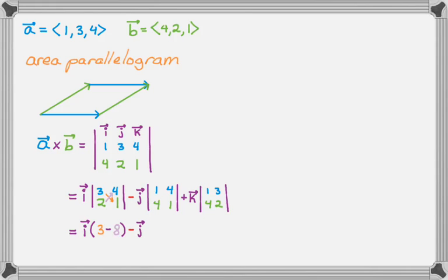And then minus J. And parentheses, it's going to be 1 times 1, and then minus 4 times 4. And then plus K. And parentheses, it's going to be 1 times 2, minus 3 times 4, which is 12.